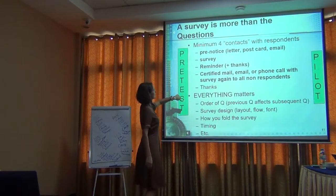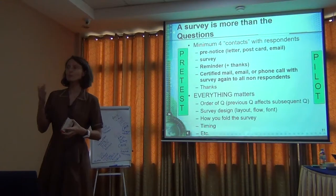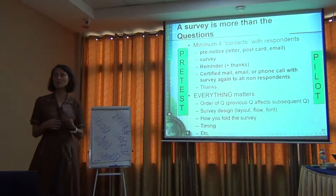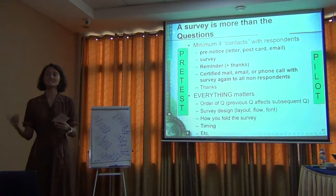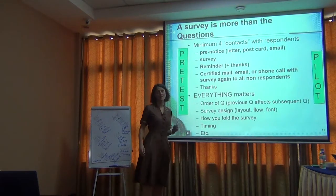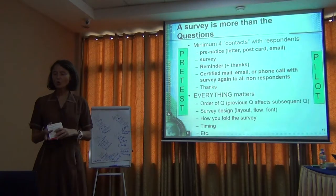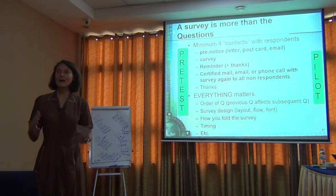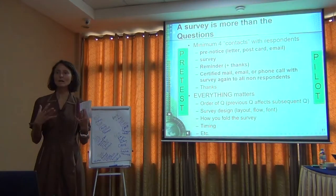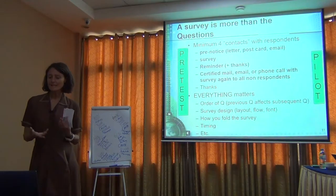A known way to improve response rate is called having multiple contacts. Four is considered the minimum — I've seen five, I've seen six. Typically you're asked to send a pre-notice letter that informs the person they've been selected from a population to take the survey, what the survey is about, and that their response is greatly needed.